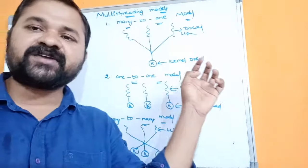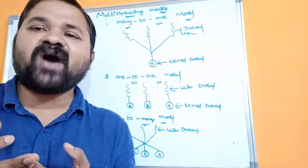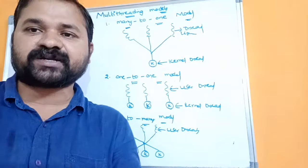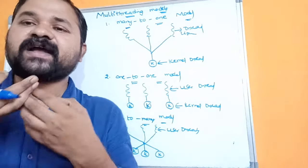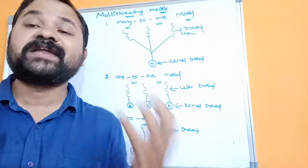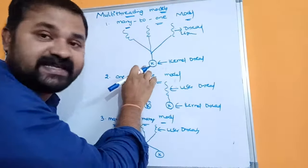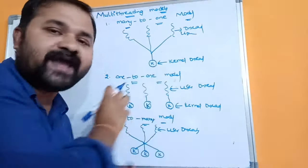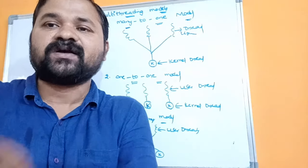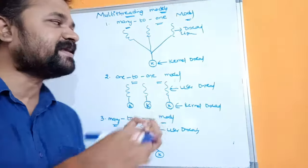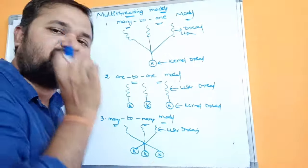The major disadvantage of this approach is that we have only one kernel thread. If we have a multi-processor architecture, it is not possible to use it here, because at a time only one thread can access the kernel. Since we don't have multiple kernels, it is not possible to use multi-processors to achieve parallelism. So parallelism is not achieved by this approach.